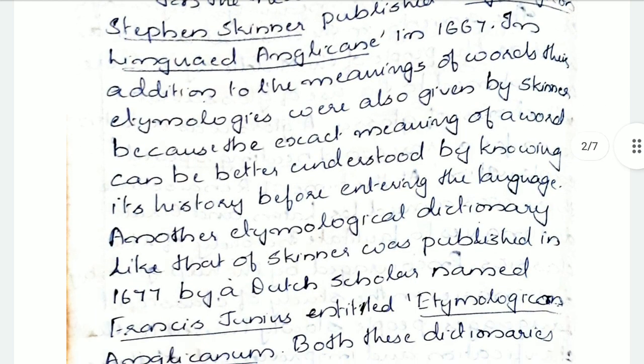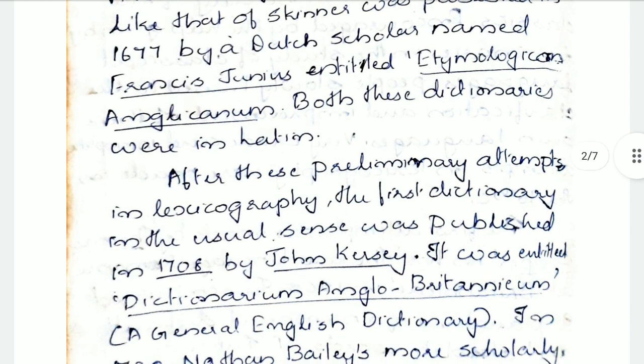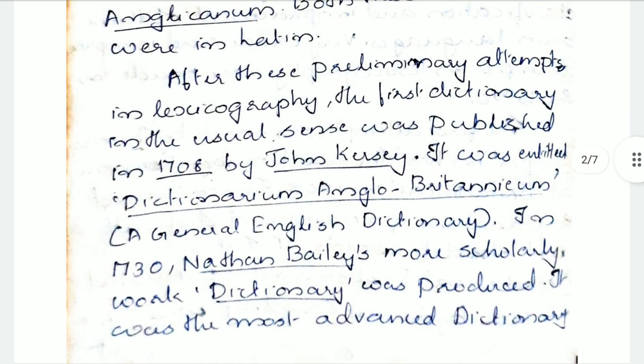Another etymological dictionary like that of Skinner was published in 1677 by a Dutch scholar named Francis Junius, entitled Etymologicum Anglicanum. Both these dictionaries were in Latin. After these preliminary attempts in lexicography, the first dictionary in the usual sense was published in 1708 by John Kersey, entitled Dictionarium Anglicanum — meaning a general English dictionary. It much sounds like our modern dictionaries.